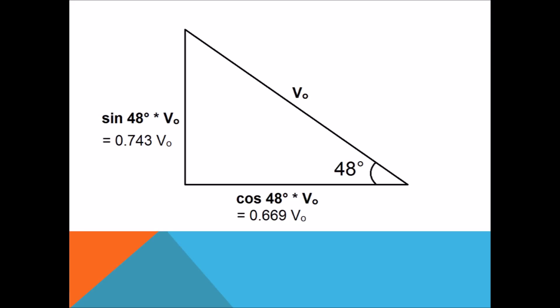We're solving for the horizontal and vertical components of the initial velocity. Since we don't know the initial velocity, we can say that sine 48 degrees times v₀, which is 0.743 times v₀, is our vertical component. For our horizontal component, cosine 48 degrees times v₀ equals 0.669 times v₀.